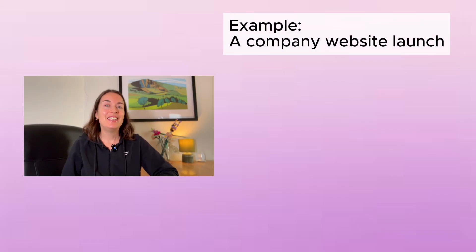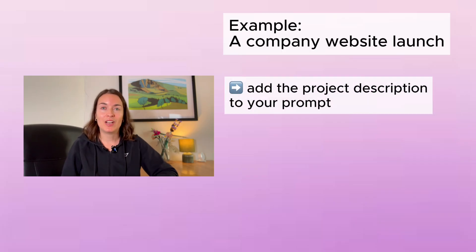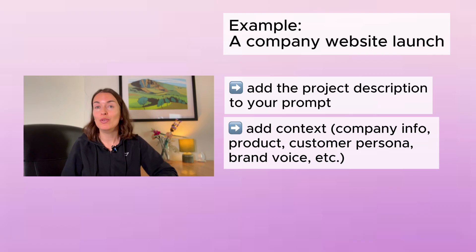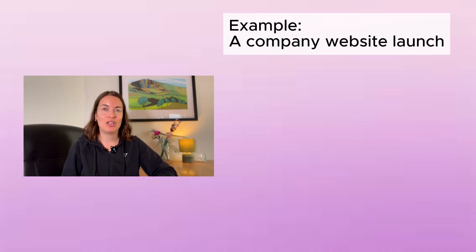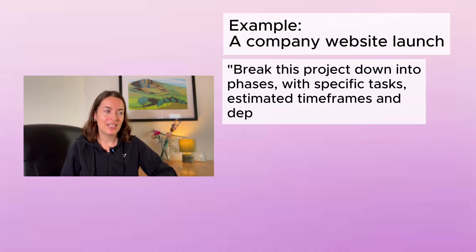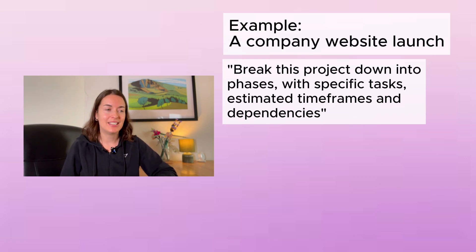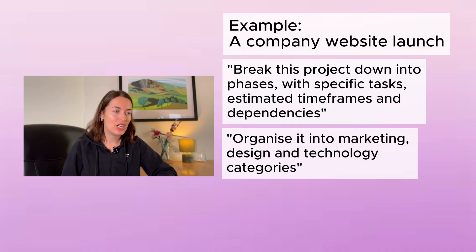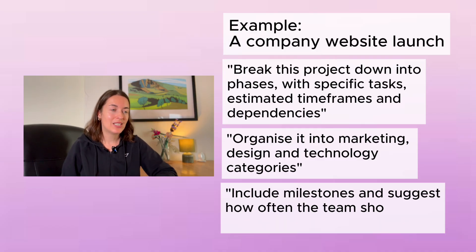For example: I'm leading a project to launch a new company website in three months. You add lots of context — what the company does, the product or service, the target audience and the brand voice — then ask ChatGPT to break the project into phases with specific tasks, estimated timeframes and dependencies. You can also ask it to organize by marketing, design and technology categories, include milestones, and suggest how often the team should meet to review progress.